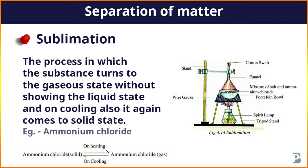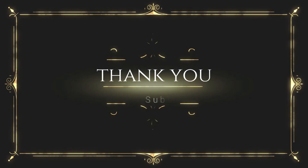For example, taking ammonium chloride and heating it — after heating, it turns into a gaseous state without showing a liquid state, and on cooling it again comes to the solid state without showing a liquid state. This type of method is called sublimation. Thank you.